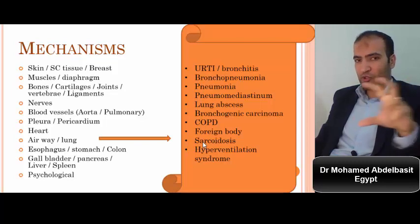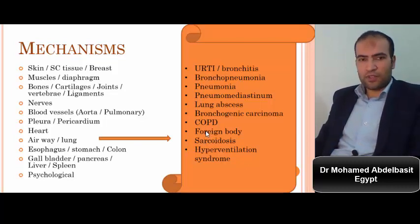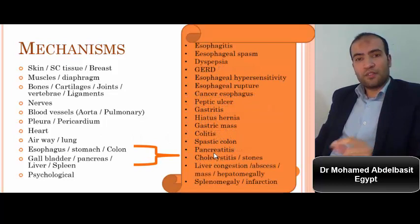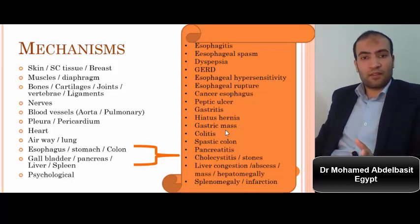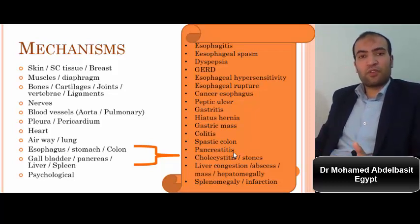Review the causes in your memory to construct a differential diagnosis for the patient. Upper respiratory tract infection, bronchopneumonia, pneumonia, pneumomediastinum, lung abscess, bronchogenic carcinoma, foreign body, sarcoidosis, hyperventilation syndrome. The esophagus is a very important source of chest pain — causing vague chest pain. Esophagitis, spasm, dyspepsia, GERD, esophageal hypersensitivity, peptic ulcer, cancer of the esophagus, gastritis, hiatus hernia, gastric mass, colitis, spastic colon, splenic flexure of transverse colon, cholecystitis, liver congestion, abscess, mass, hepatomegaly, splenomegaly, splenic infarction.